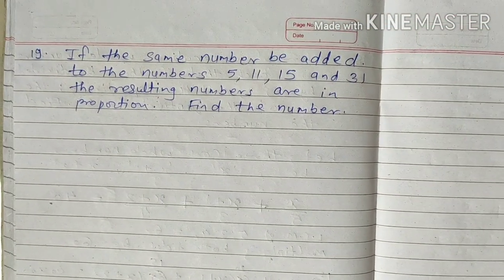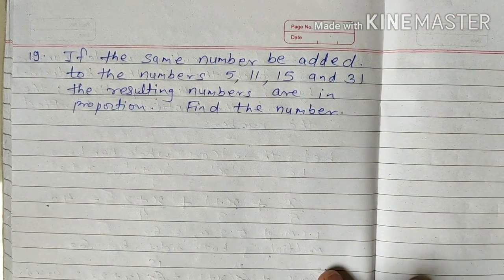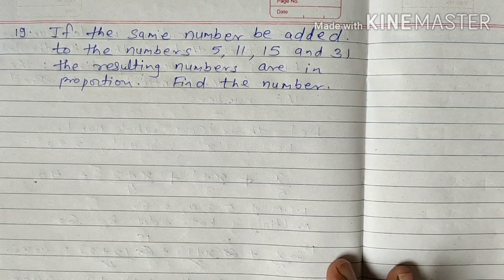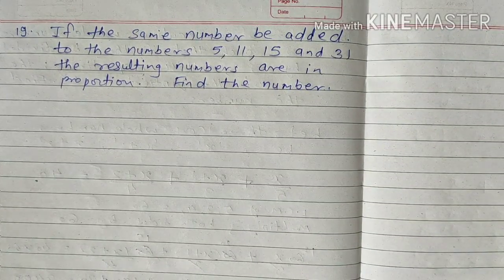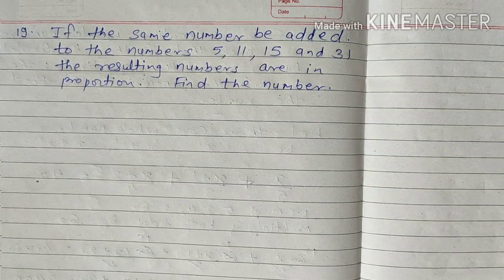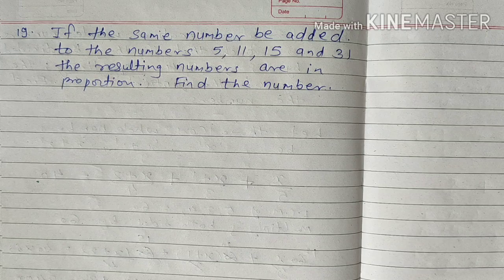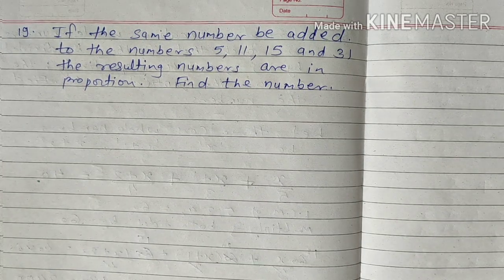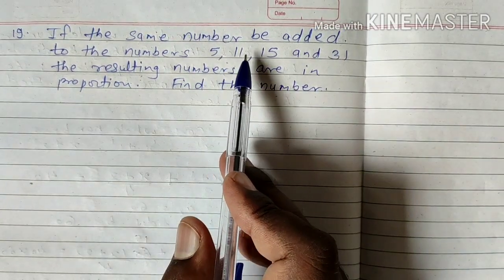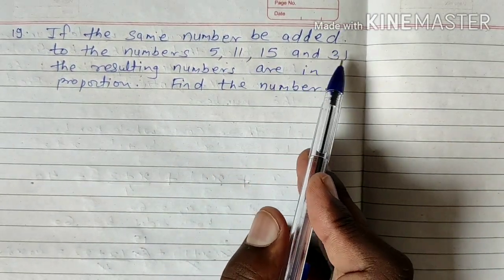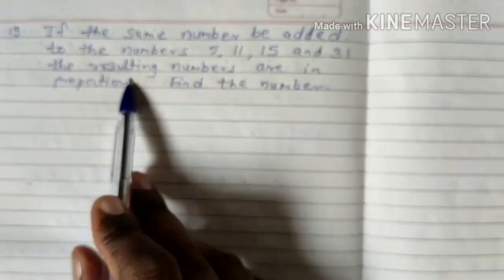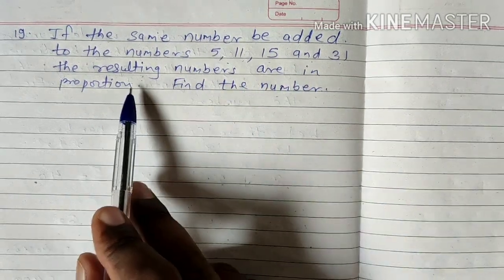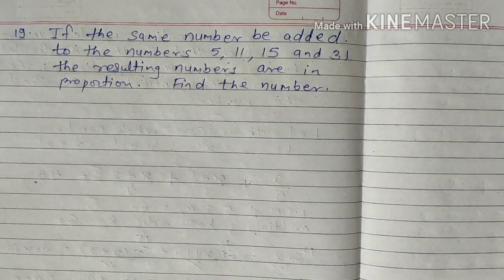Now the next question is question number 19. If the same number is added to the numbers 5, 11, 15, and 31, the resulting numbers are in proportion. Find the number.